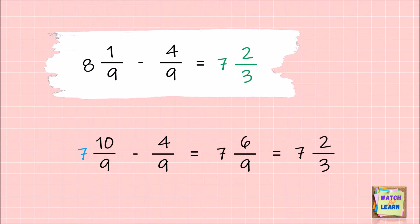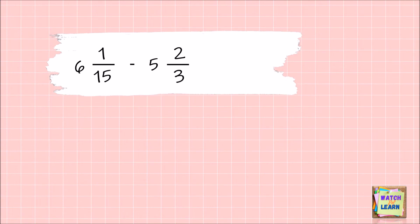This method is applicable only if they are similar fractions. In case of dissimilar fractions, we have to make it first a like fraction. Example: 6 and 1/15 - 5 and 2/3. First, we have to get the LCD of both fractions or LCM of both denominators to make like fractions. The LCM of denominators 15 and 3 is 15.